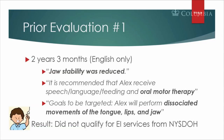Here are some conclusions contained in the first evaluation, at two years, three months, English only. Jaw stability was reduced. It is recommended that Alex receive speech, language, feeding, and oral motor therapy. Goals to be targeted: Alex will perform disassociated movements of the tongue, lips, and jaw. Result: did not qualify for EI services from the New York State Department of Health.